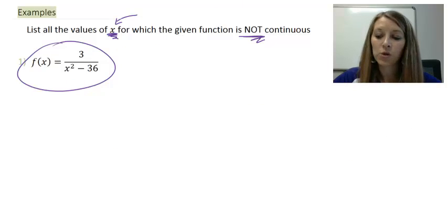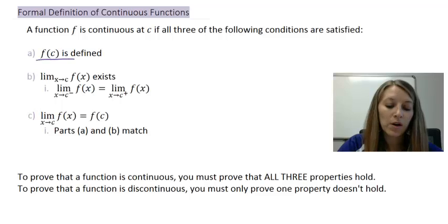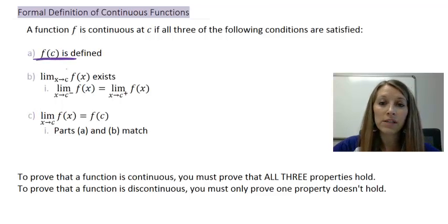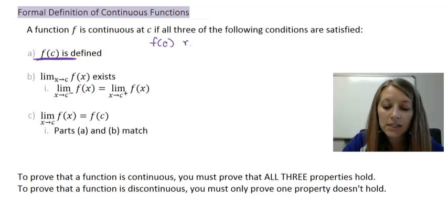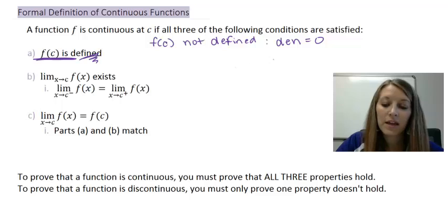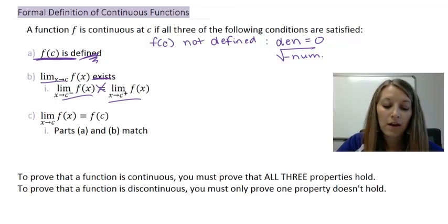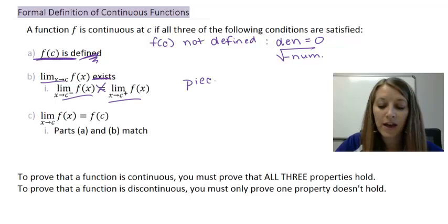Let's reinforce this by looking at the formal definition of a continuous function. First, we want to play devil's advocate: when is our function not defined? That happens most specifically when our denominator equals zero. Another thing that causes functions to not be defined is if we have the square root of a negative number. Next, what causes our limit to not exist, or what causes our left-hand limit to not match our right-hand limit? The only time they don't match is because we have separate pieces defined — so a piecewise function can cause that.